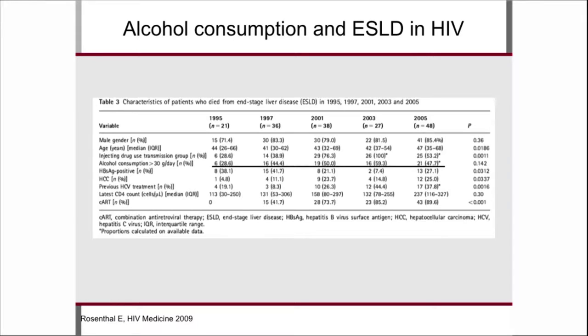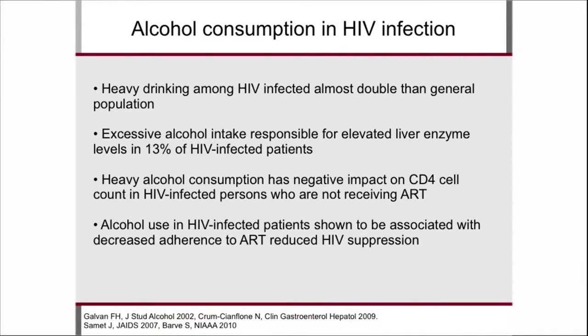Many studies are not really representative because the collectives are very different — it matters whether you're looking at a mainly drug-user collective, mainly MSM, or an immigrant community. But what has been pointed out in several studies is that heavy drinking is more common in HIV patients. In one study, alcohol was responsible for elevated liver enzyme tests in about 13% of patients, and heavy alcohol consumption has an impact on the immune system: CD4 counts are lower, and it may affect adherence and therefore HIV viral suppression.